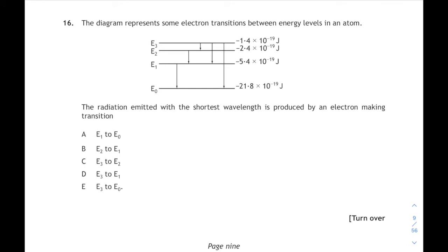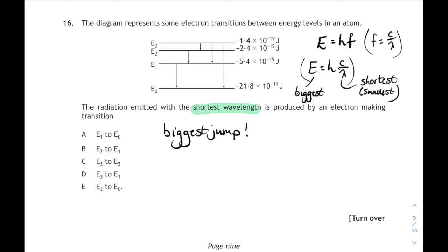Question 16. We're asked, the radiation emitted with the shortest wavelength is produced by an electron making which transition? Well, you might already know the shortest wavelength will be the highest frequency. So that's the biggest jump if you want to use the equation E equals HF, where F is the frequency of the photon. We can use V equals F lambda where V is the speed of light. So F equals C over lambda. You can substitute that in. And if we want the smallest, shortest wavelength, then if that number on the bottom is very, very small, then it means our energy has to be very, very big. So the biggest energy difference will give us the shortest wavelength of light. So which of our answers corresponds to the biggest jump? It's E3 to E0. So the biggest jump, that's answer E.